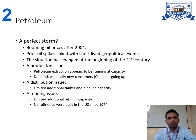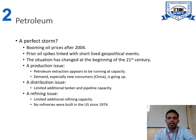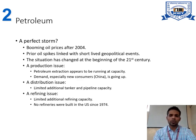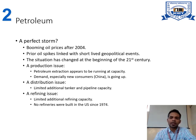The petroleum storm of booming oil prices after 2004 saw prior oil spikes linked with short-lived geopolitical events. The situation changed at the beginning of the 21st century. A production issue: petroleum extraction appears to be running at capacity. Demand, especially from new consumers like China, is going up. Distribution issues include limited additional tanker and pipeline capacity, and there is also a refining issue.